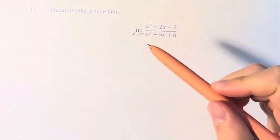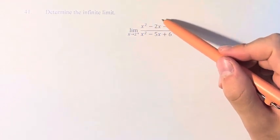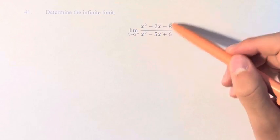In this problem, we're asked to determine the infinite limit, where you have the limit as x approaches 2 from the right of x squared minus 2x minus 8 over x squared minus 5x plus 6.